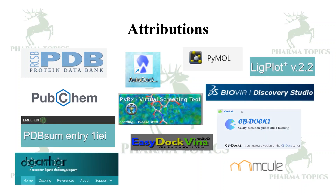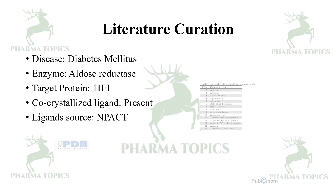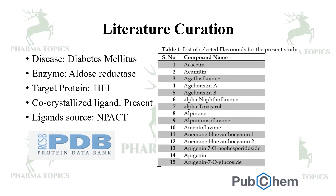Look here — these things are used in this workshop. Thanks to these contributors. In the literature, if we see, the disease taken is diabetes mellitus, the enzyme is aldose reductase, the target protein is 1IEI, a co-crystallized ligand is present, and the ligands are taken from the NPACT database. The protein is downloaded from the protein data bank and the test ligands are 13 ligands, with the co-crystallized ligand being the 14th ligand.